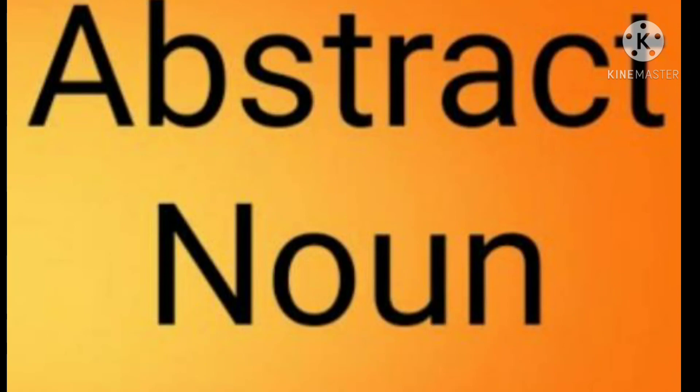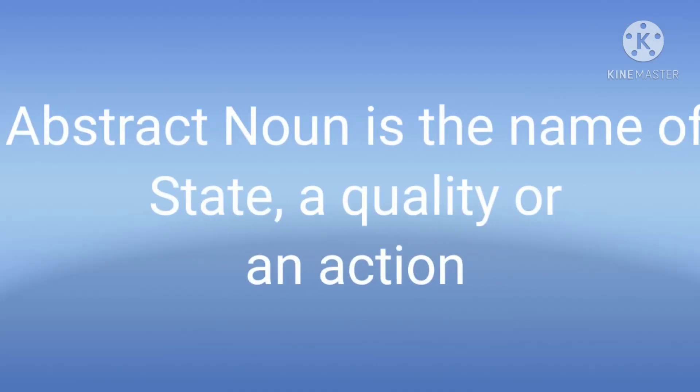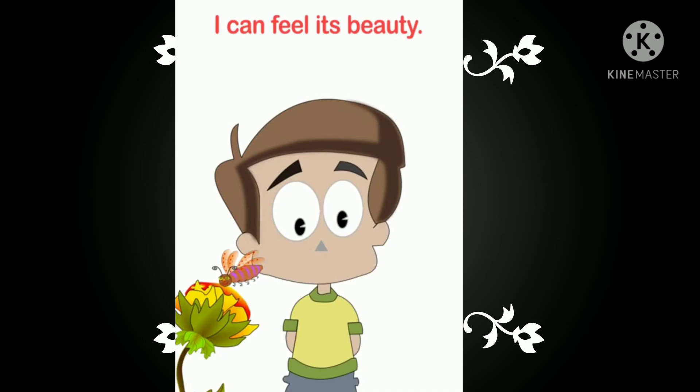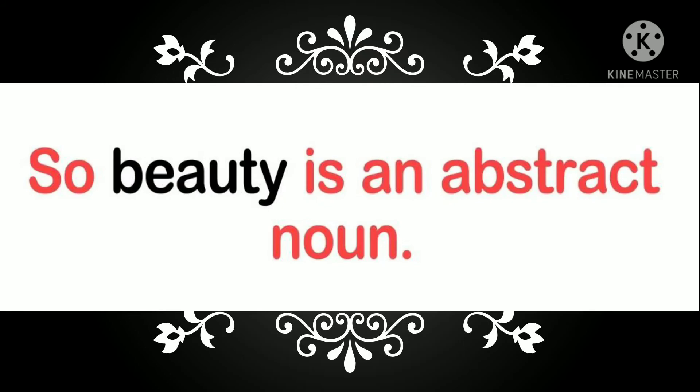The last one is abstract noun. Abstract noun is the name of a state, quality, or an action — jis se hum feel kar sakte hain, but dek nahin sakte, touch nahin kar sakte — that we can't see or touch, we can only feel it. For example: I can feel its beauty — here beauty is an abstract noun. Hum feel kar sakte hain beauty ko, but beauty ko touch nahin kar sakte.